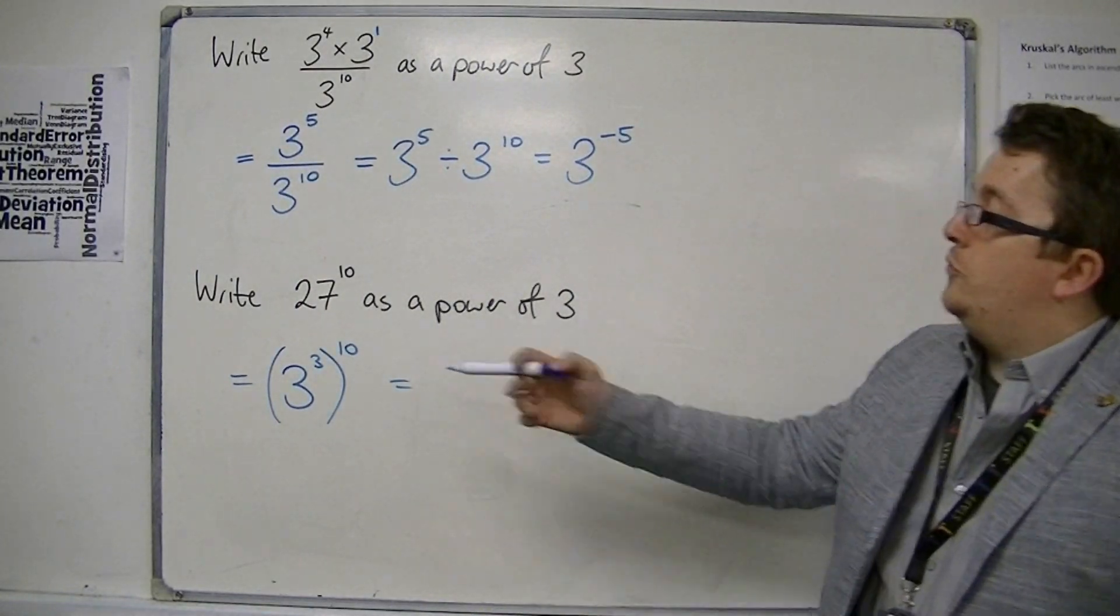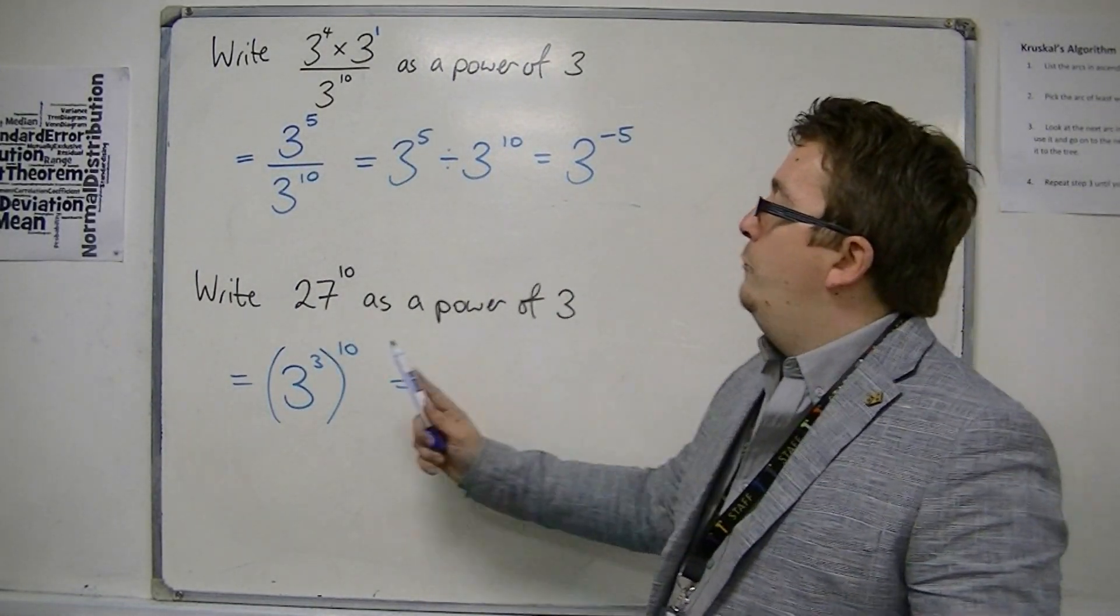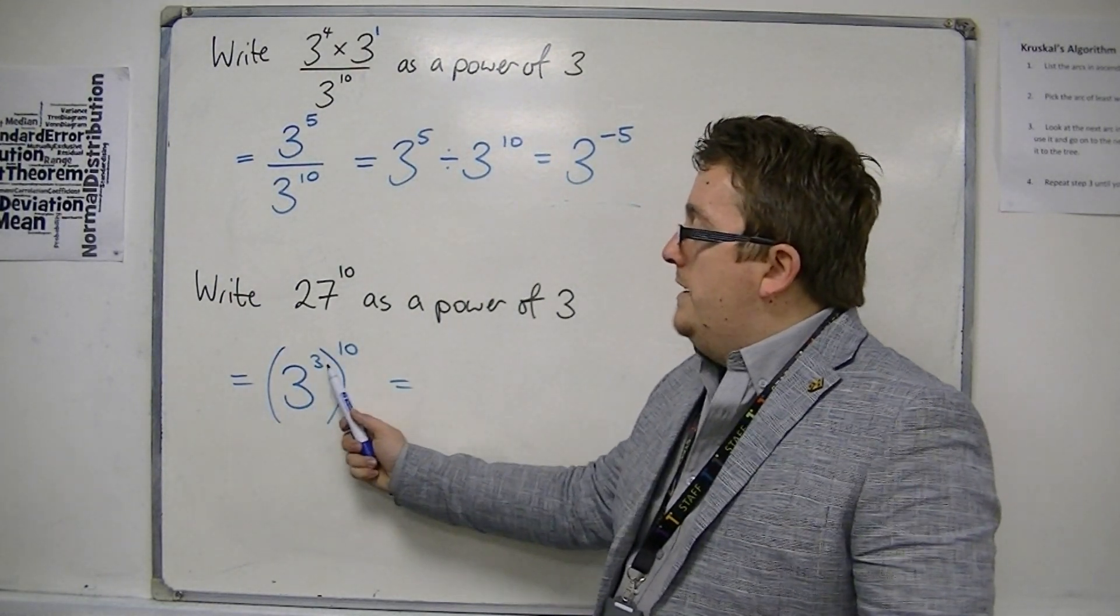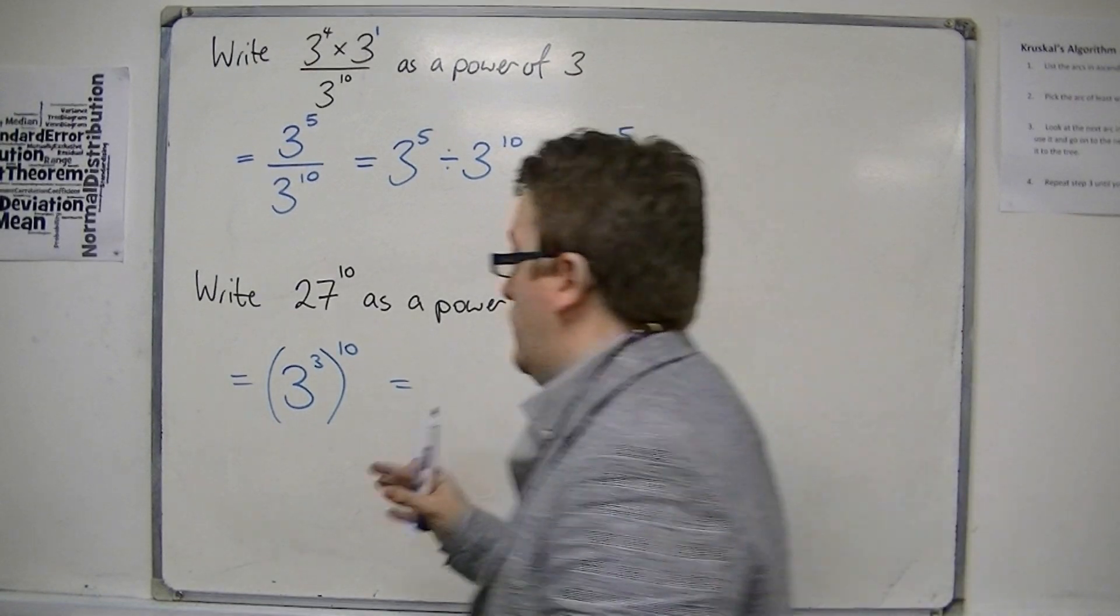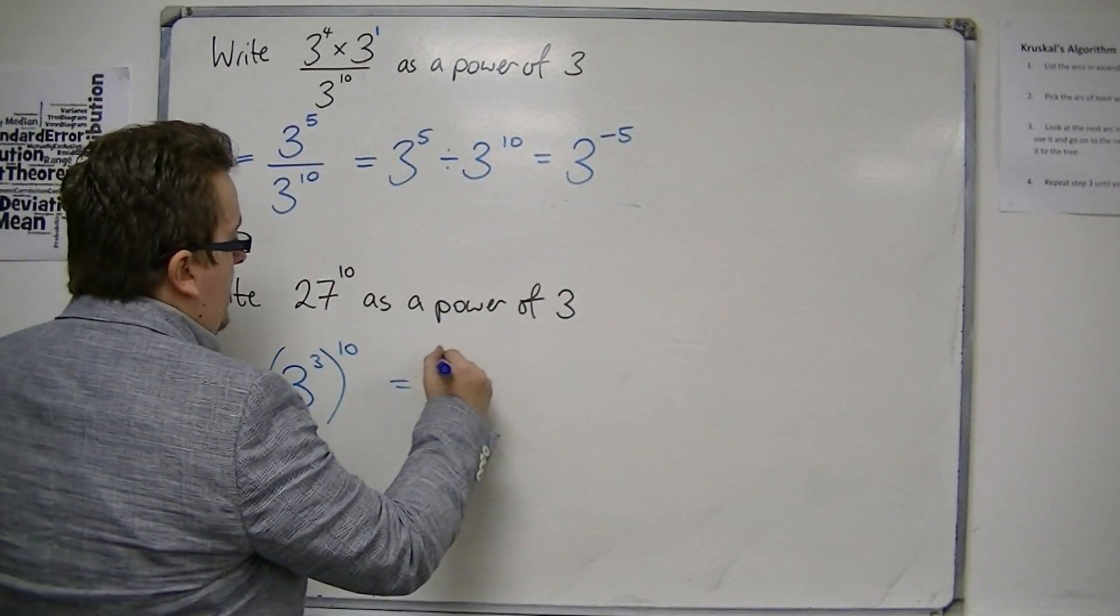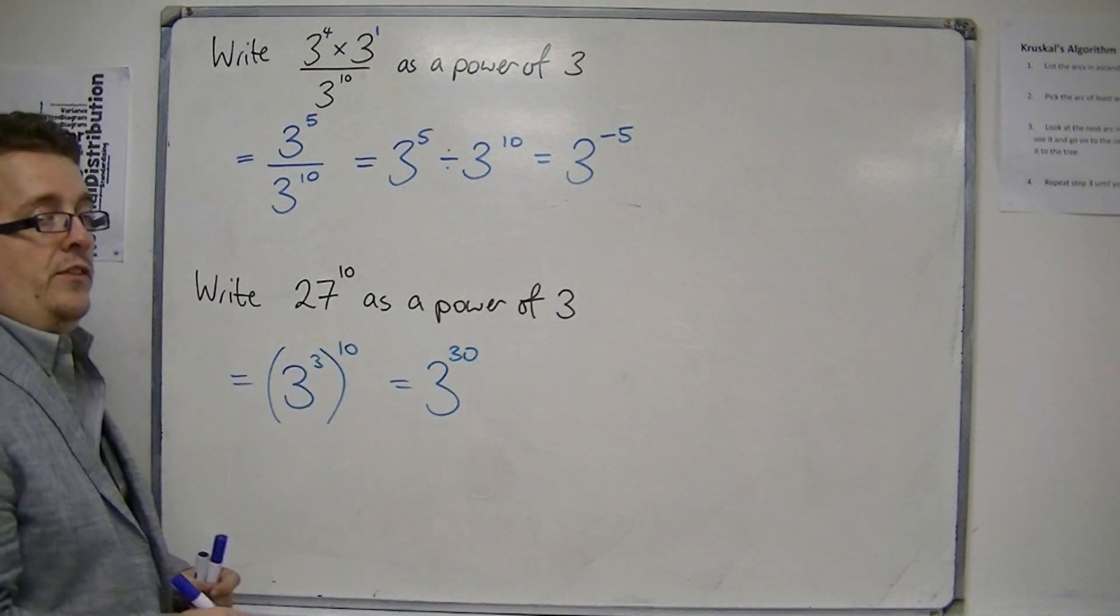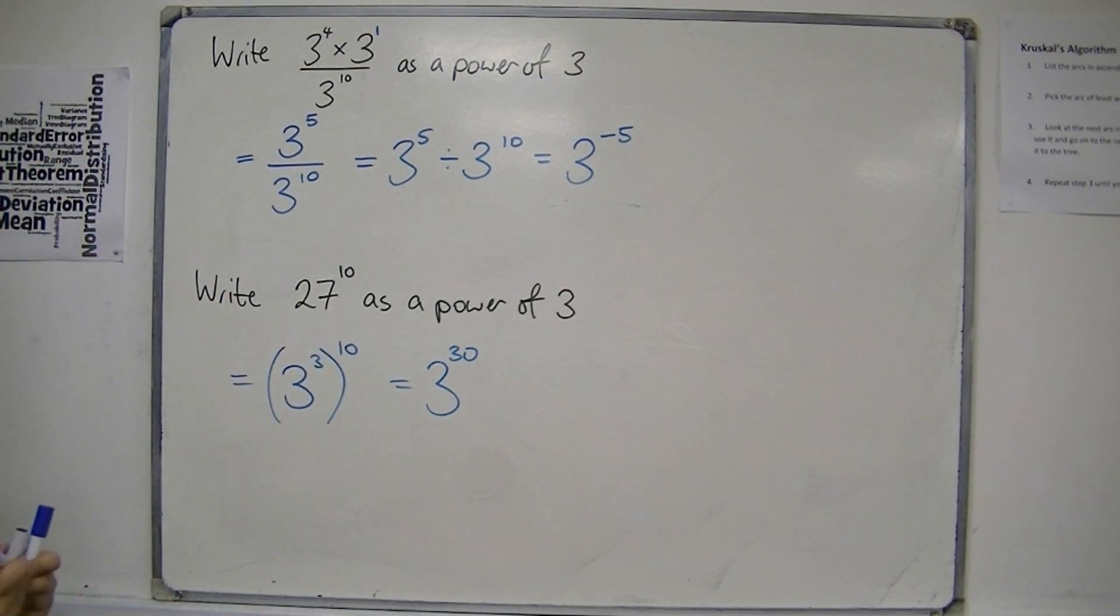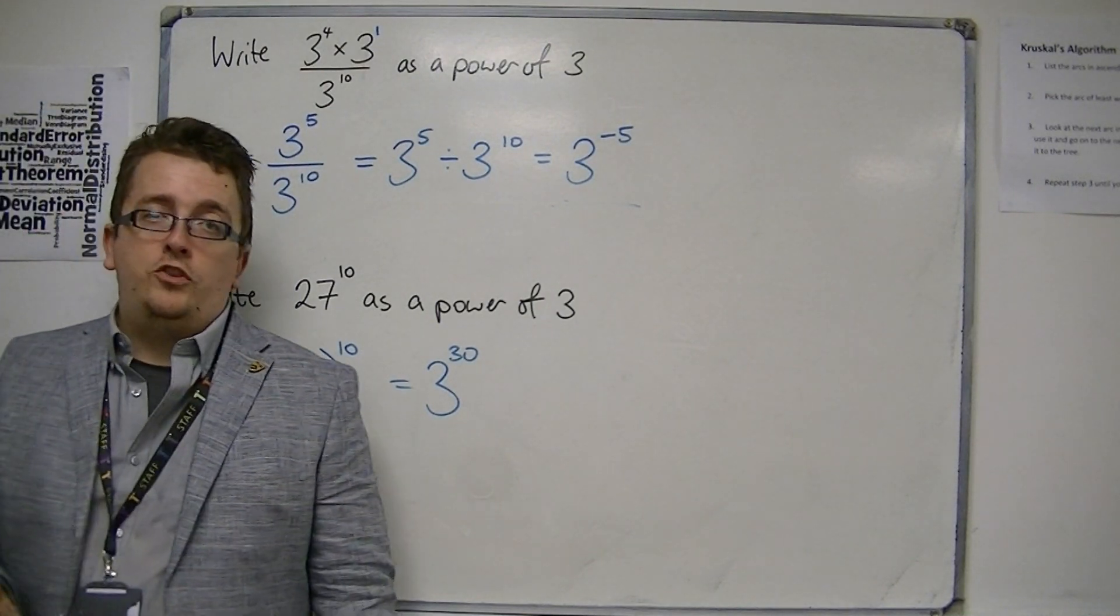And we know that one of our rules says that if we've got an index inside a bracket and an index outside, then they multiply together. So this is 3 to the power of 30. Because 3 times 10 is 30. So that is how we can use our rules to manipulate these expressions.